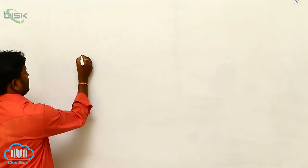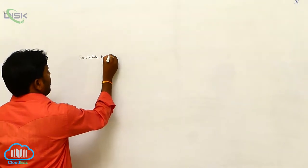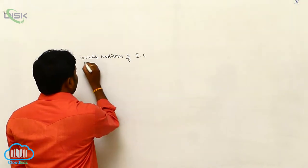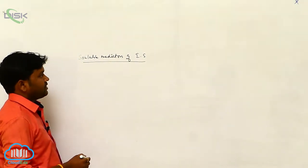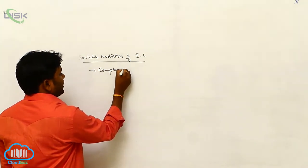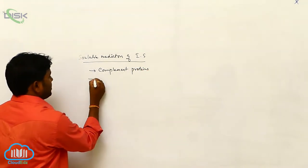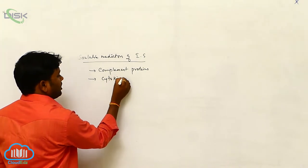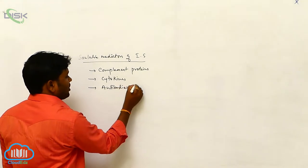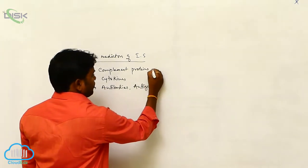The fourth basic concept is soluble mediators of the immune system. There are three types: first is complement proteins, second is cytokines, and third is antibodies. Now let's see the complement proteins.